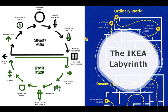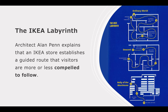IKEA is a labyrinth and it will take you on a journey from the ordinary world. You're going to cross the threshold and descend into the special world where you're going to face lots of adversaries — things that you have to battle against. You've got conflict, and then there's a reward and the road back when you return with things that you didn't have when you set off. Architect Alan Penn explains that the IKEA store establishes a guided route that visitors are more or less compelled to follow. There are ways you can circumnavigate if you have special knowledge and know the secret routes of IKEA, but more or less you have to follow the paths they lay out — and they do it for a reason.